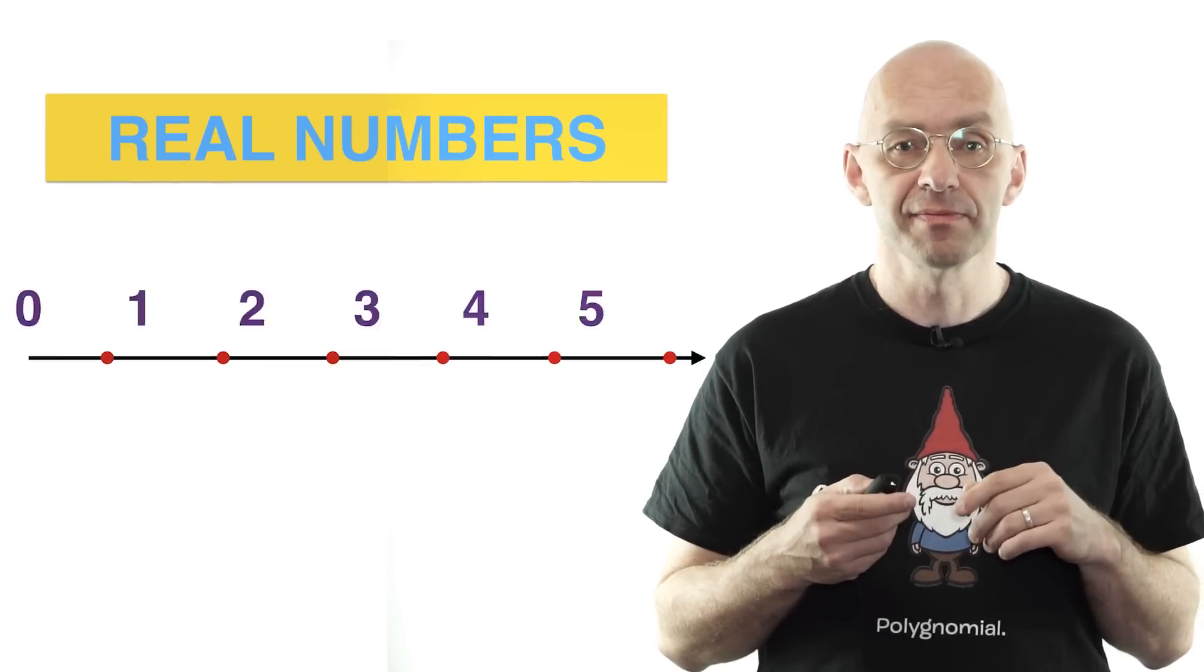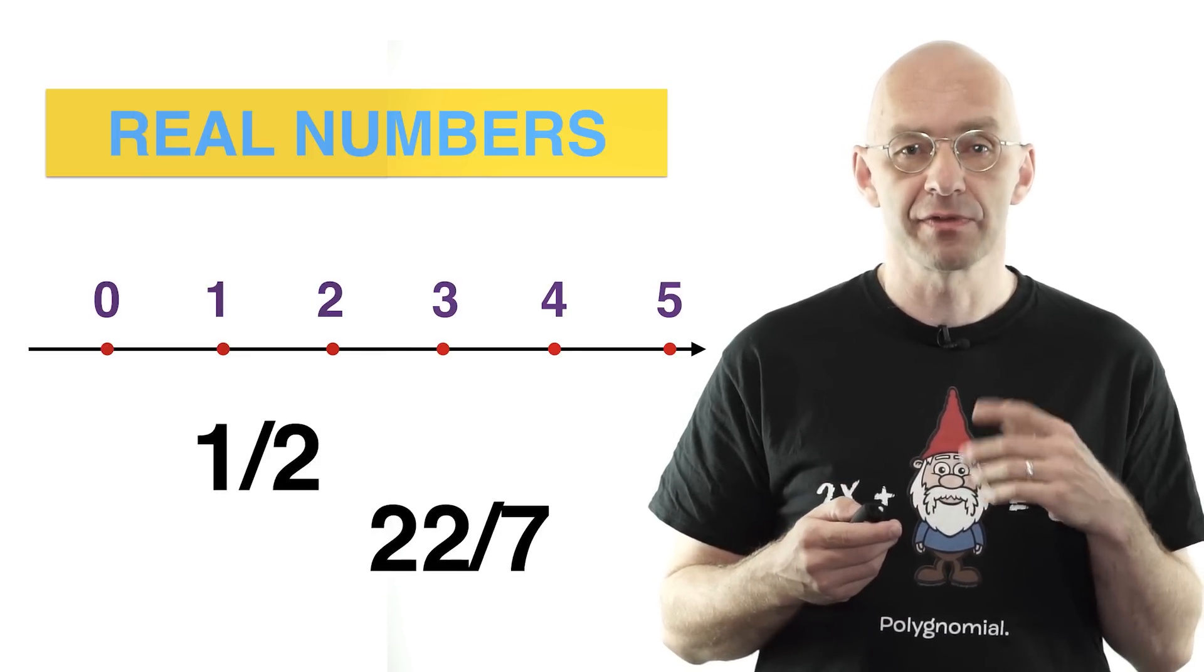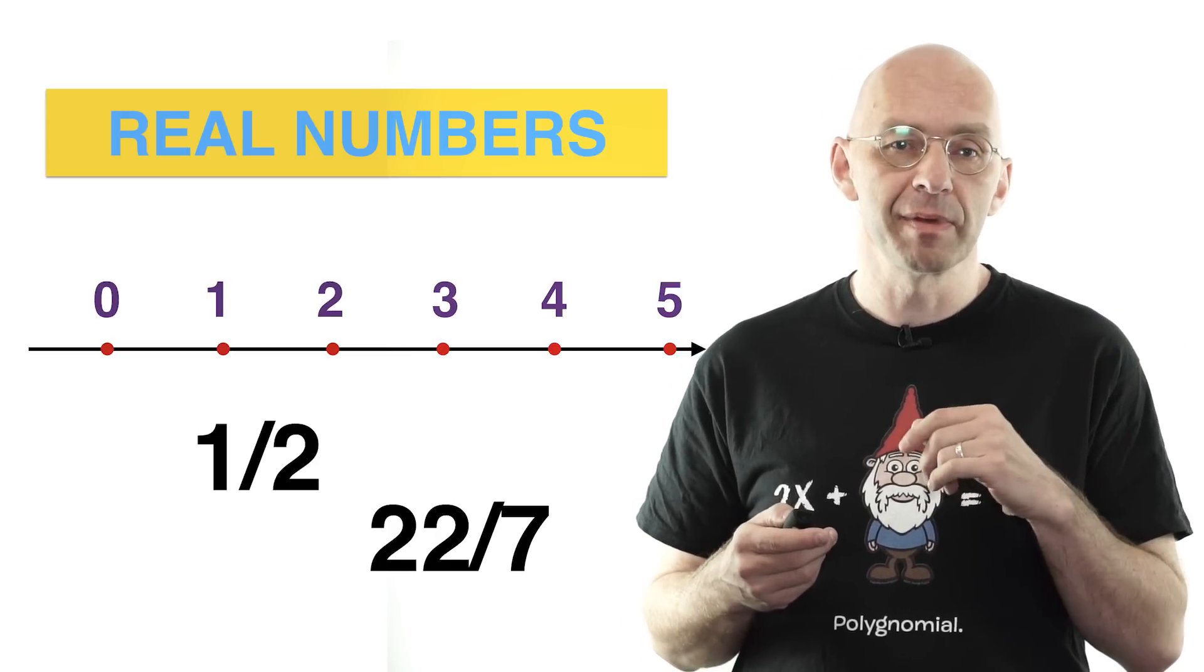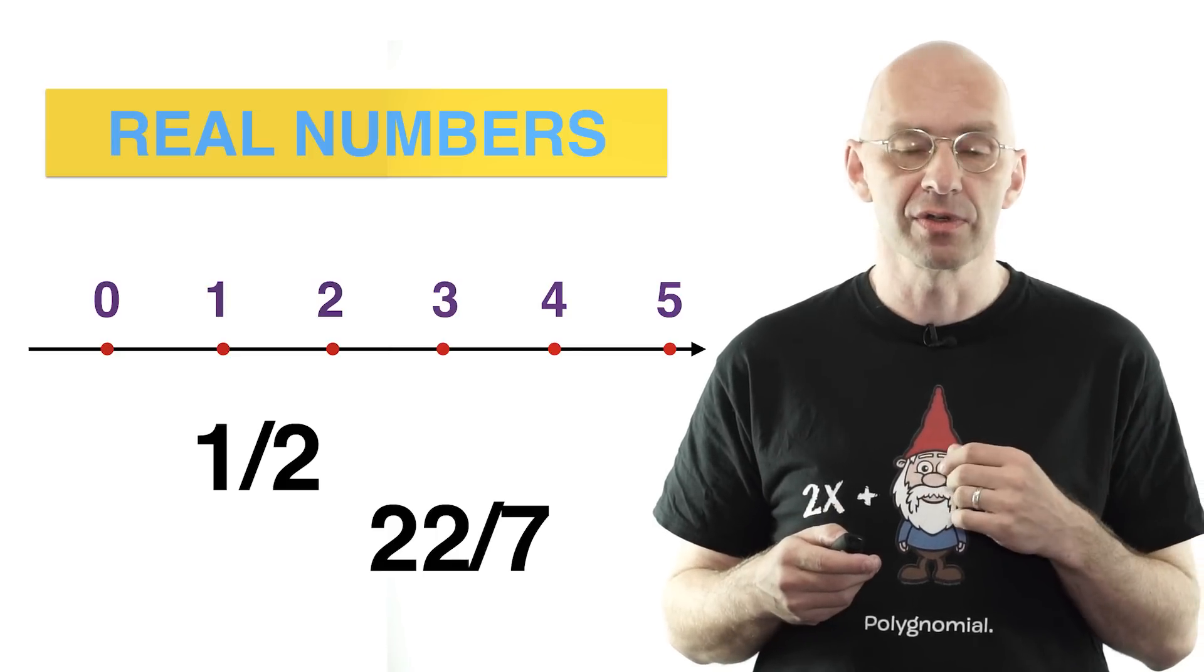To start with, there are the integers and the rational numbers, the numbers that can be expressed as fractions of integers. In fact, for a long time people believed that all numbers are rational, and it's actually quite natural to do so.